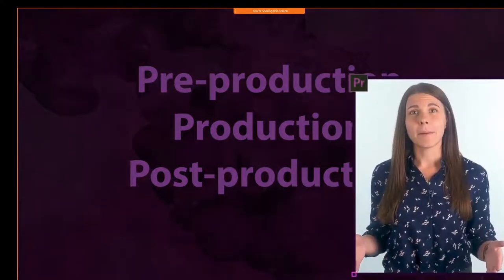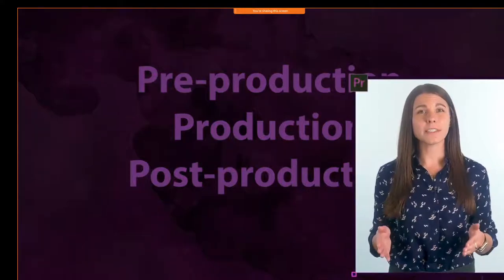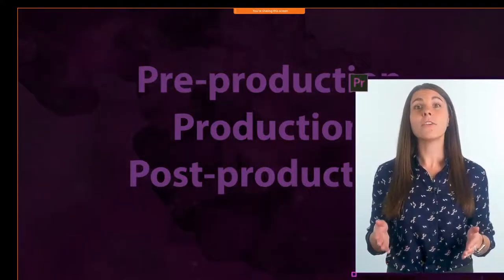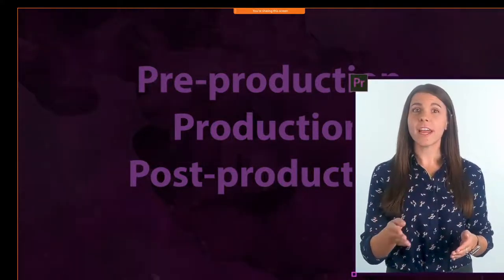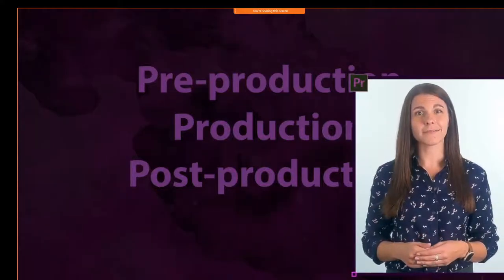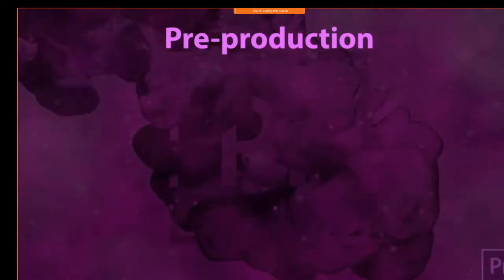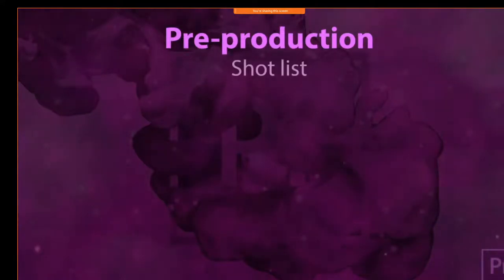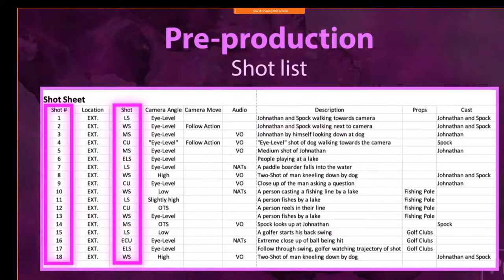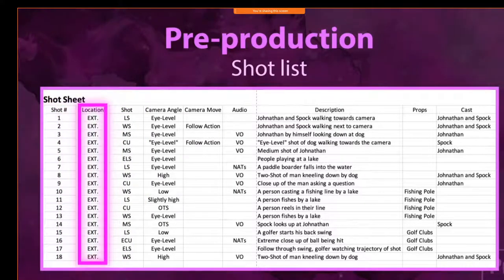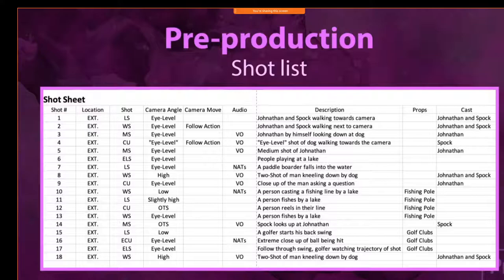For the exam, make sure you know which aspect of production fits in the pre-production, production, and post-production categories. In pre-production, three aspects make up a design plan. Let's look at an example of each. Shot list — this needs to contain camera shots, where they are located, and the number of cameras used for each shot, if you are using more than one camera.